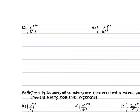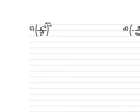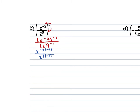For example 3c, we have x to the negative 2nd over 2 cubed, all raised to the negative 1st power. We apply this negative 1 to both numerator and denominator: x to the negative 2nd raised to the negative 1st, and 2 cubed raised to the negative 1st. That negative 2 times negative 1 gives us positive 2, so that's x squared on top. That 2 to the 3rd to the negative 1 is 2 to the negative 3rd, so we bring it up — giving us 2 to the 3rd times x squared. 2 to the 3rd is 8, so the final answer is 8x squared.